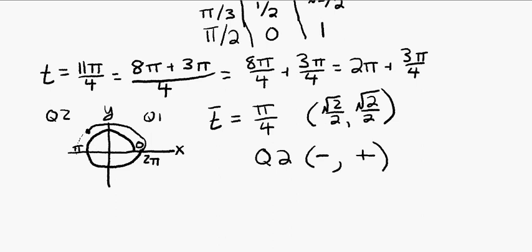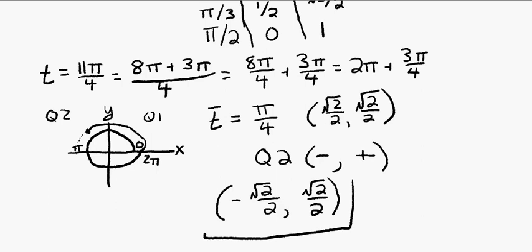So when we do our final answer, we have to apply these signs. Our final answer is going to be negative √2/2 and positive √2/2. That is the x,y coordinates for the terminal point.